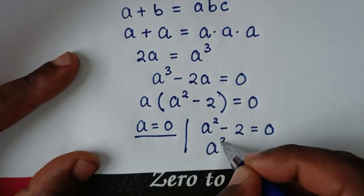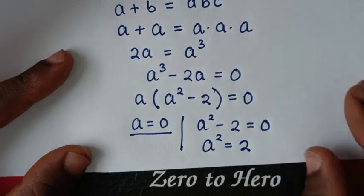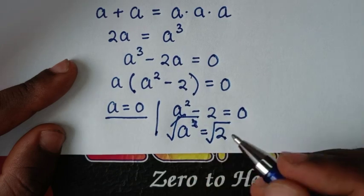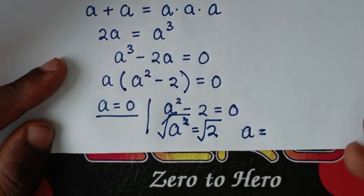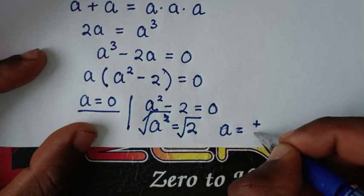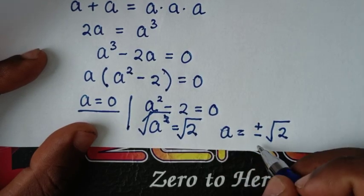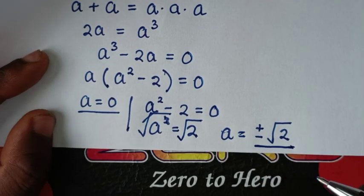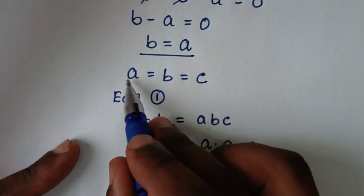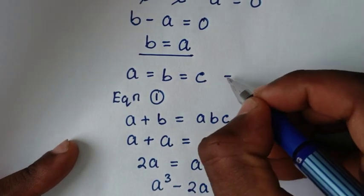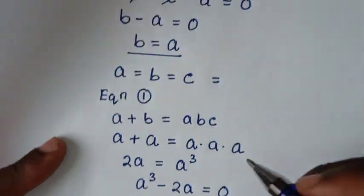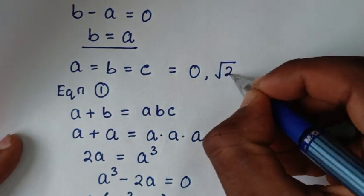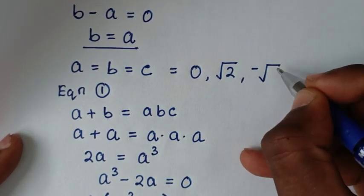From a squared minus 2 equals 0, we take negative 2 to the other side to get a squared is equal to 2. Applying square root to both sides gives a is equal to plus or minus square root of 2. So we have two values: positive square root of 2 and negative square root of 2.